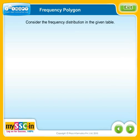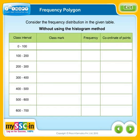Consider the frequency distribution in the given table. Let's see the steps to draw a frequency polygon without using the histogram method. First, check that the class intervals are continuous. Here the class intervals are continuous, so we proceed to the next step.